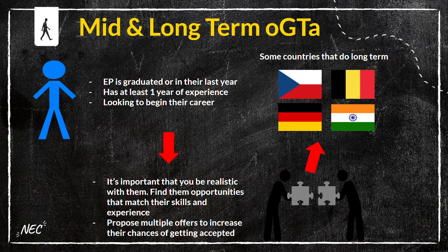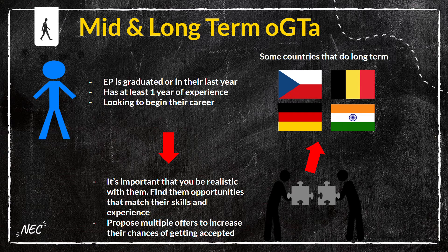For the mid and long-term OGTA persona, this EP is graduated or in their last year of school, has at least one year of experience, and is looking to begin their career — not just gain experience, but boost or begin a career working long-term. It's important to be realistic with them and find opportunities that match their skills and experience. Make sure their CV and profile are tailored to the opportunity. Propose multiple offers — I recommend three to five applications per EP. Countries to promote include Czech Republic, Belgium, Germany, and India, all with fairly attractive long-term opportunities.